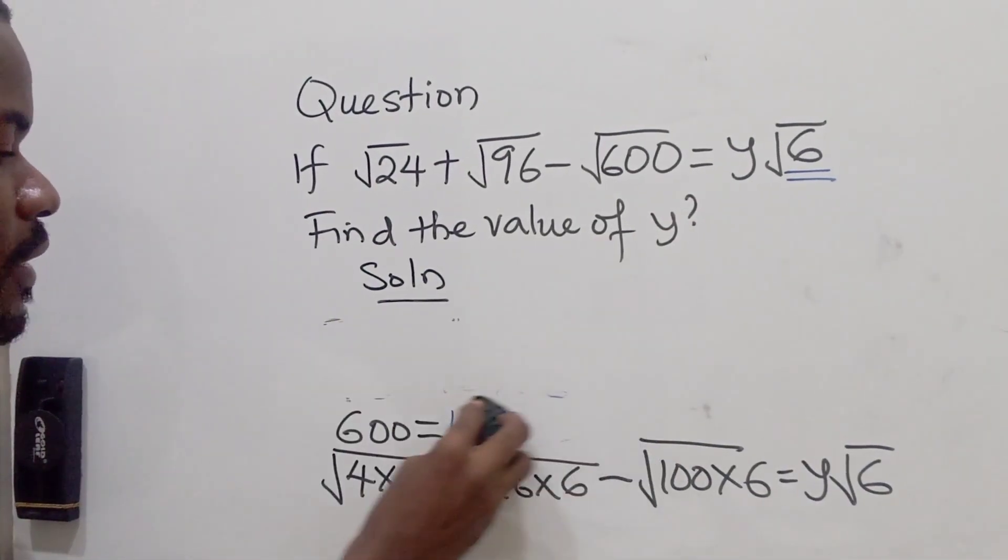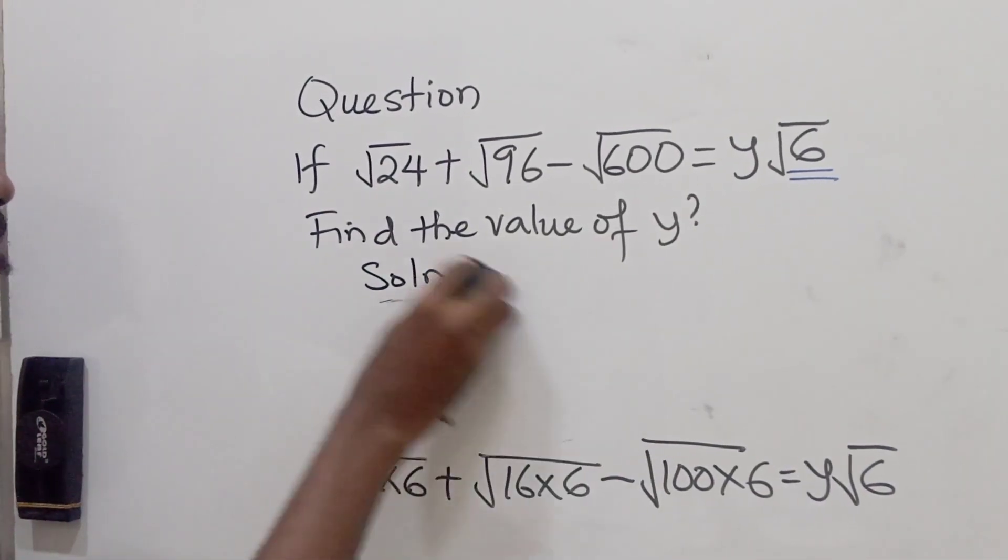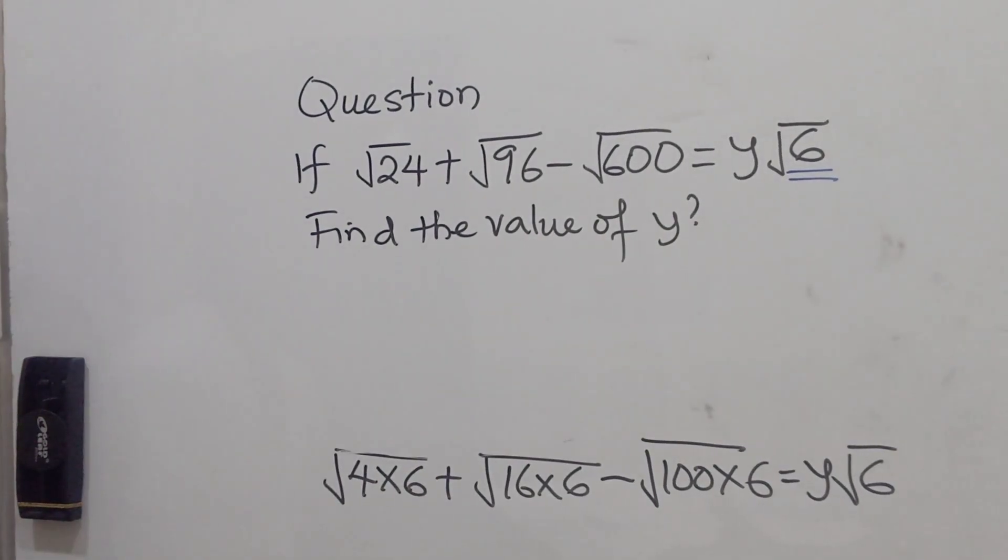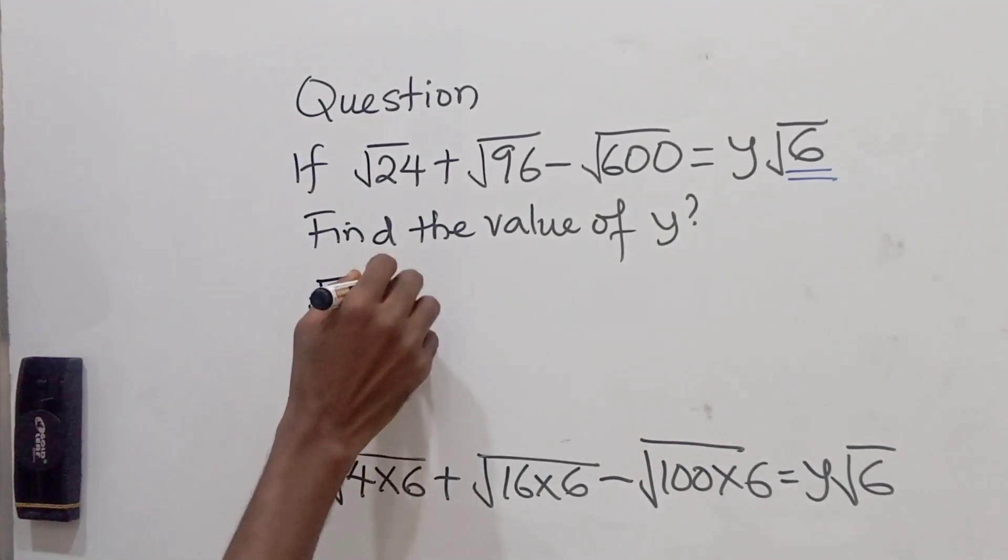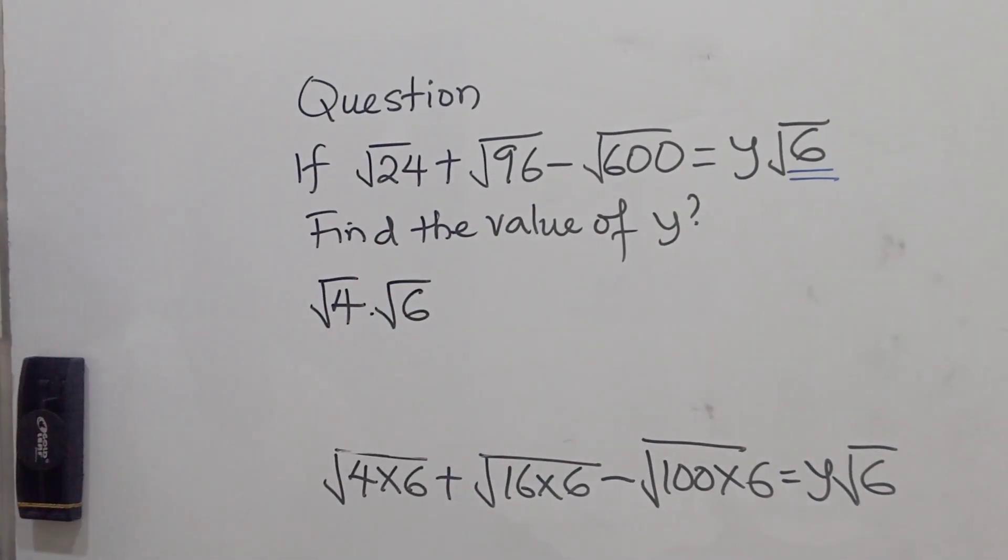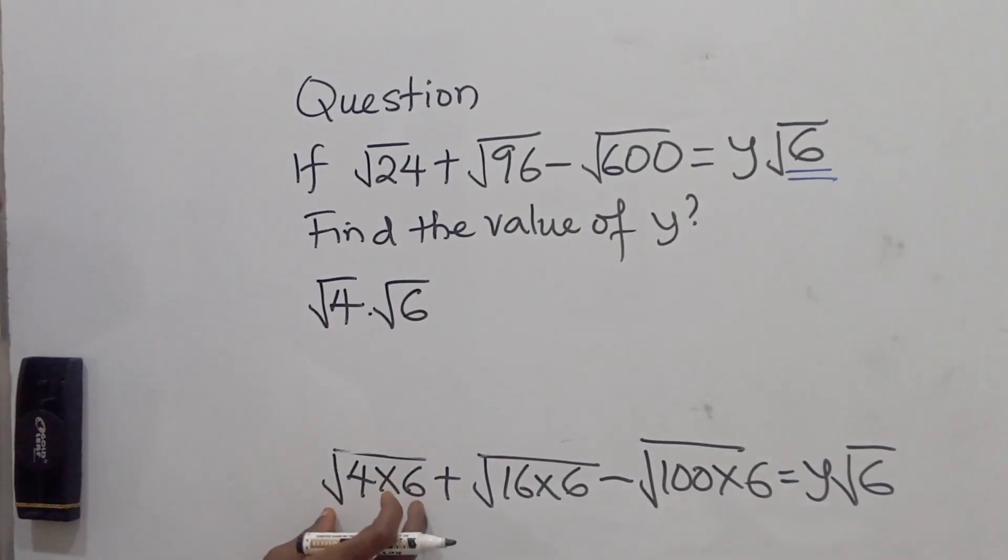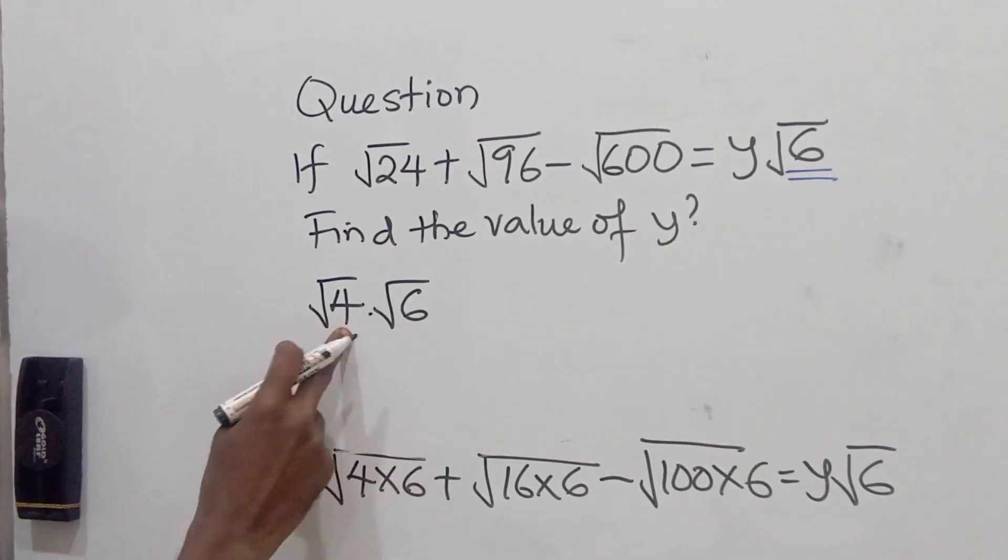It makes the problem even easier now. These are all perfect squares. So I can make them root 4 multiplied by root 6. Now remember, when you have something like this, you can break it to separate roots.